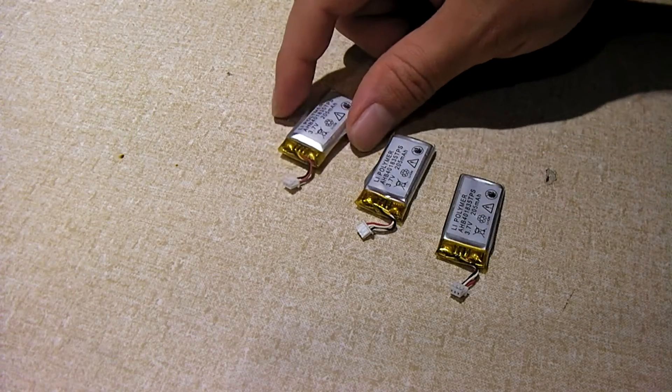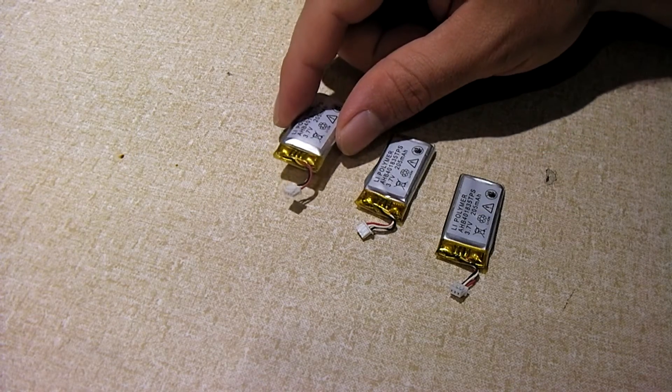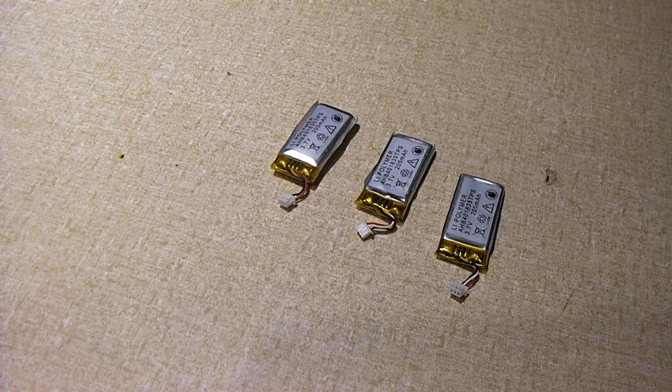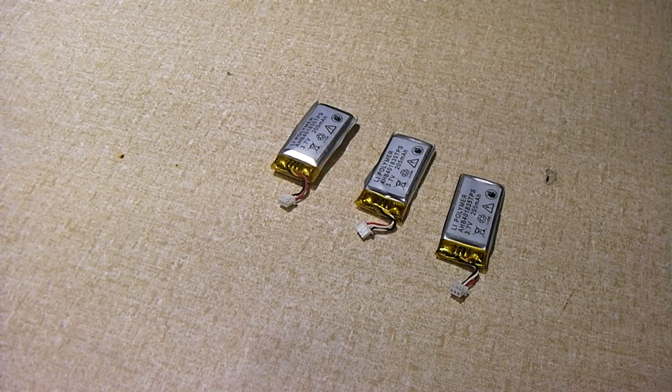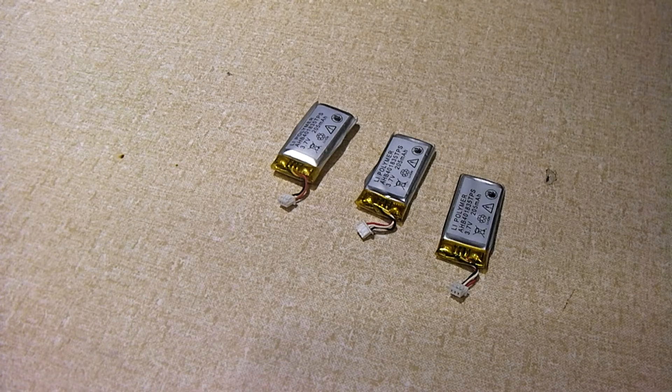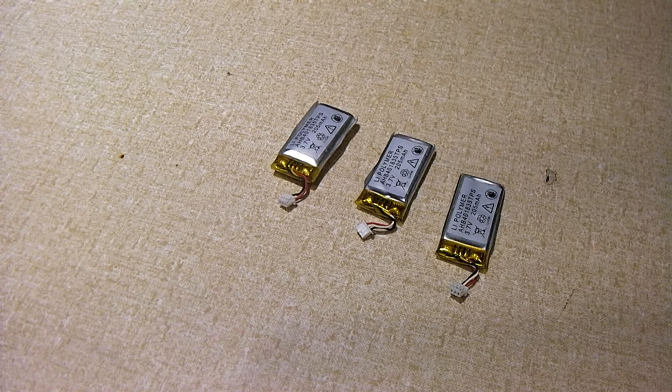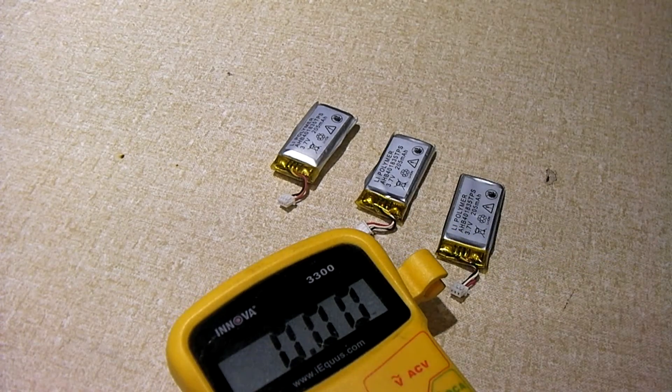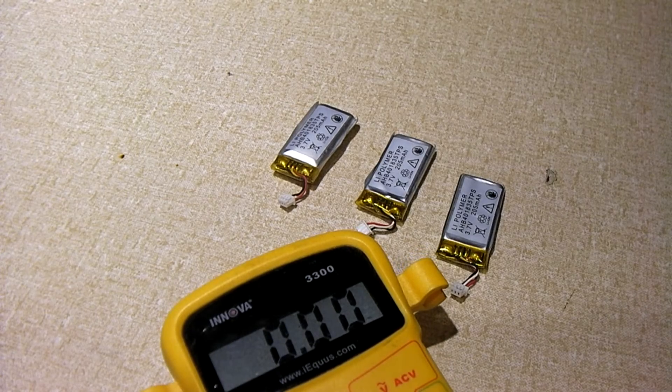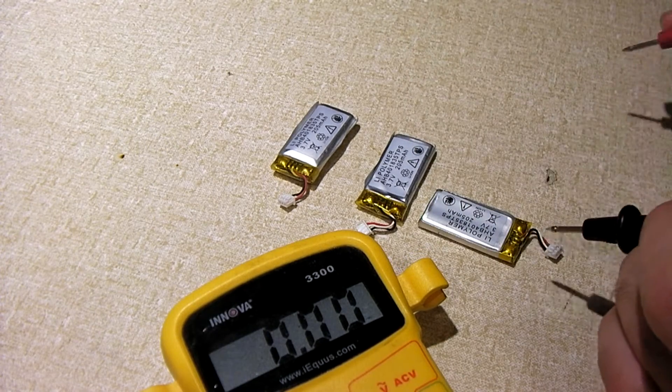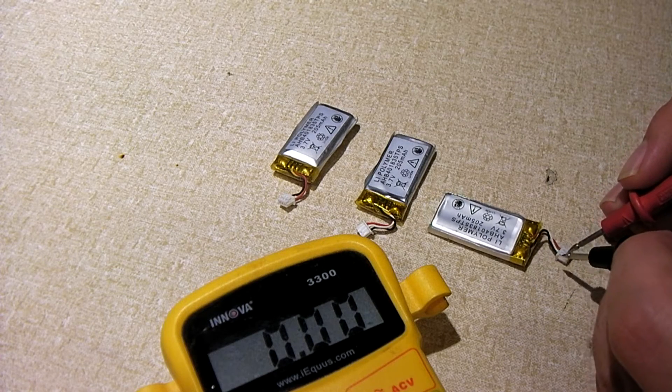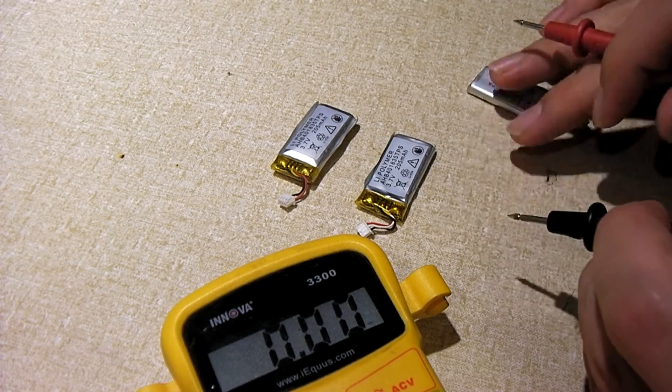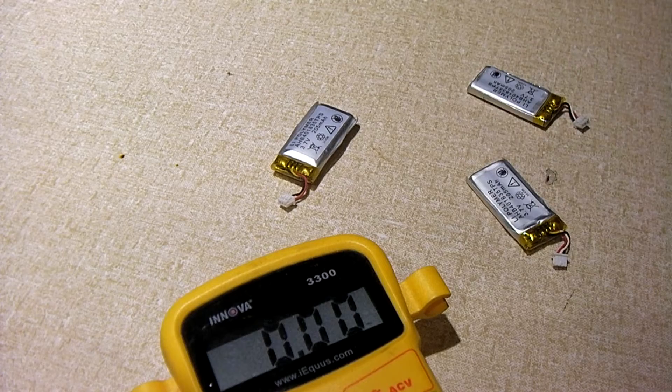This one, however, at least when I measured it today, showed exactly zero volts. Which means one of two things. Either the battery voltage has gotten down to zero, or the protection circuit has locked out voltage from the cell. So I'm going to show you, for example, I'll measure this one.